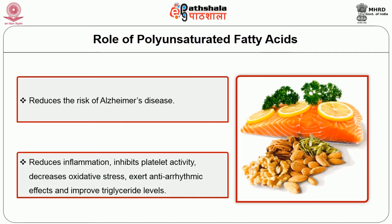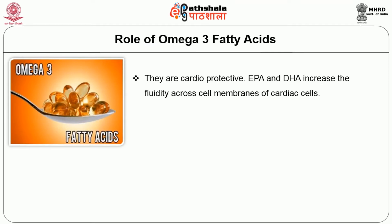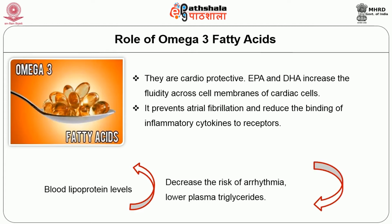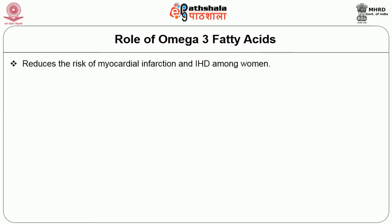PUFA reduces inflammation, inhibits platelet activity, decreases oxidative stress, exerts anti-arrhythmic effects and improves triglyceride levels. Omega-3 fatty acids are cardioprotective. EPA and DHA increase the fluidity across the cell membranes of cardiac cells. They prevent atrial fibrillation and reduce the binding of inflammatory cytokines to receptors. They improve blood lipoprotein levels, decrease the risk of arrhythmia, lower plasma triglycerides, and reduce the risk of myocardial infarction and ischemic heart disease among women.